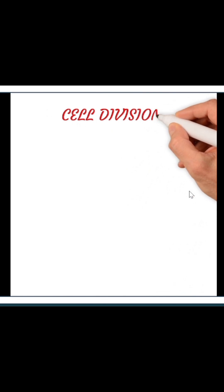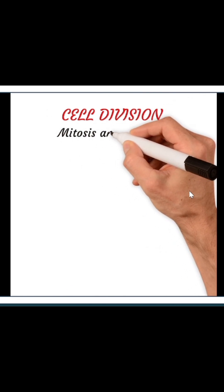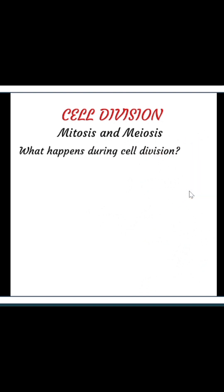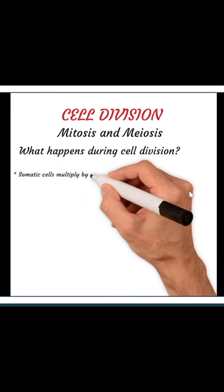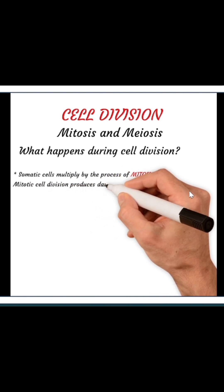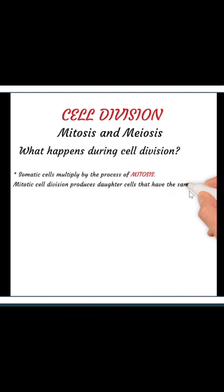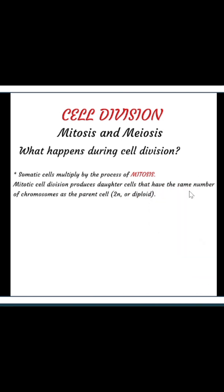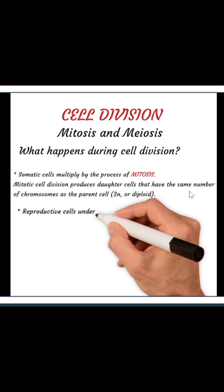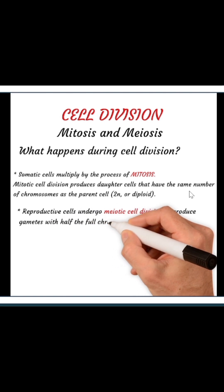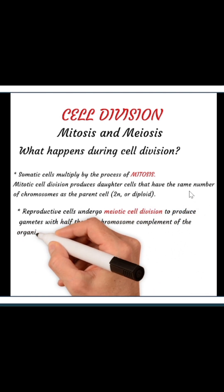Let's look at cell division. We have two types of cell division: mitosis and meiosis. During cell division, somatic cells multiply by the process of mitosis. Mitotic cell division produces daughter cells that have the same number of chromosome complement as the parents — the diploid number of chromosomes. Reproductive cells, on the other hand, undergo meiotic cell division, or meiosis, to produce gametes with half the full chromosome complement — that is, the haploid number of chromosomes of that organism.